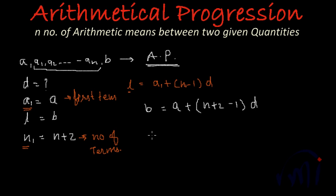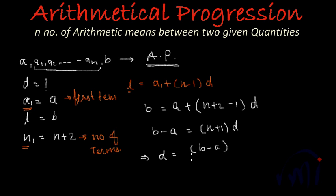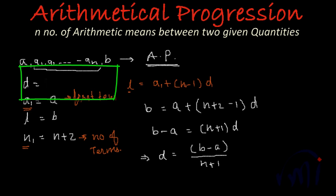If we bring a to the left of the equal sign, it becomes b minus a equals (n plus 2 minus 1) multiplied by d, which gives n plus 1 multiplied by d. From here we get d equals b minus a divided by n plus 1. So if you have to insert n number of arithmetic means between two terms a and b, the common difference will be d equals (b minus a) divided by (n plus 1).